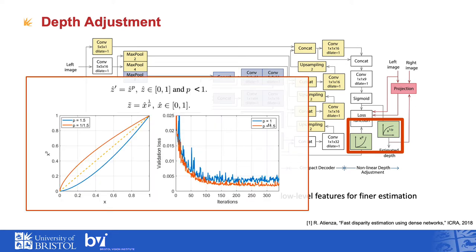We propose a non-linear adjustment to the depth ground truth so that closer objects have higher depth resolution than distant objects or background. This picture demonstrates how the depth values are adjusted with an exponential function when p equals 101.5. The last plot shows that depth values close to 0 — the area near the camera — are stretched out, gaining higher resolution, while values close to 1 are shrunk for the area far from the camera. This technique improves the validation loss by approximately 15%, as shown in the right figure.